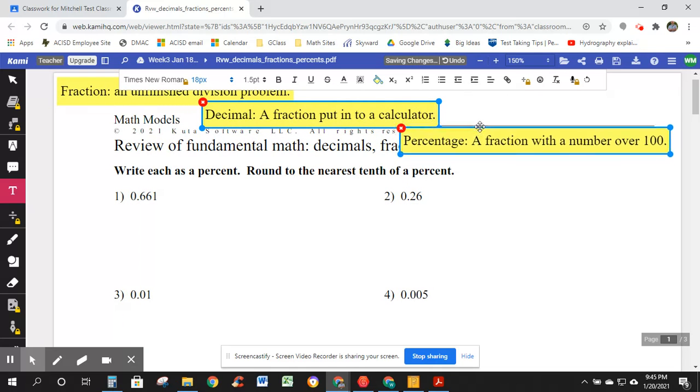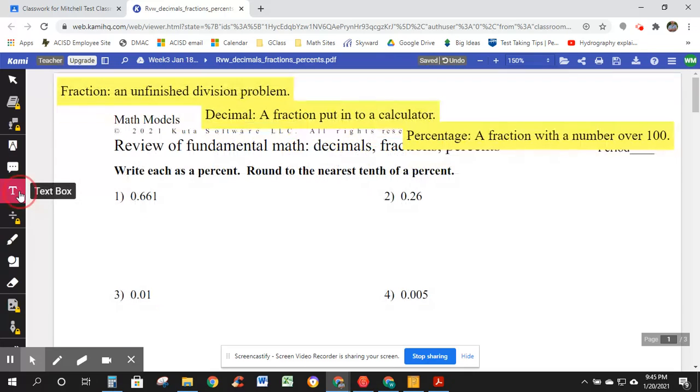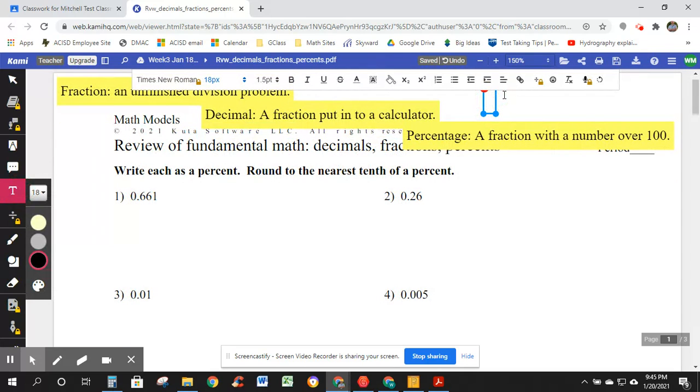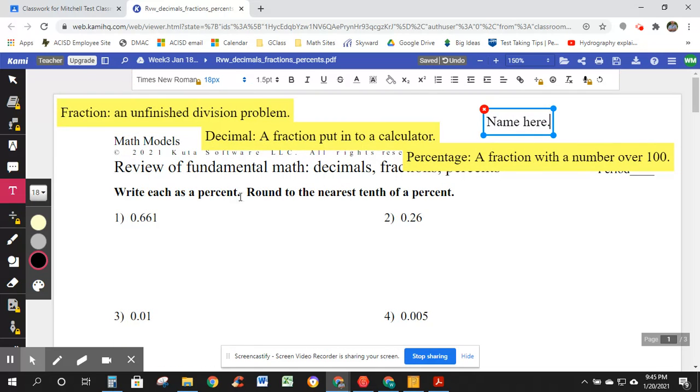Organize it how you want. If you're going to use Kami, maybe you want to cascade them down like that. And if I want to add my name, I can just put it somewhere up here in the corner. A fraction is an unfinished division problem. A decimal is a fraction put into a calculator. And a percentage, a fraction with a number over 100, where the 100 is the denominator.